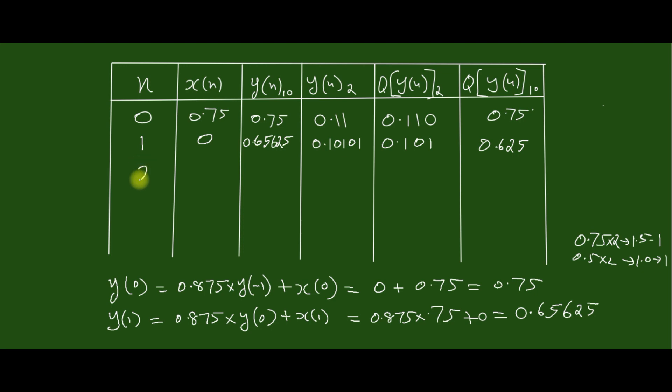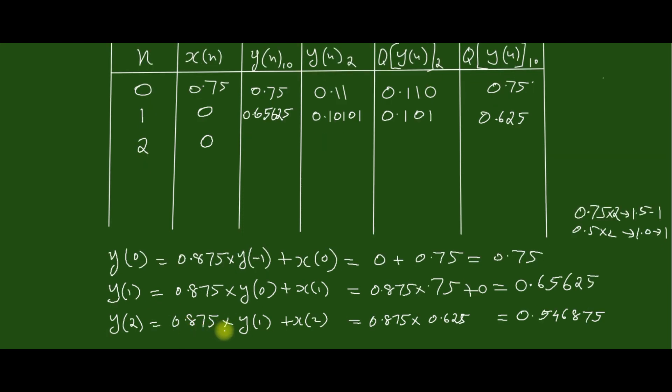Next, when n = 2, x(n) = 0, then y(n) can be computed as y(2) = 0.875 × 0.625, that is y(1), the previous quantized value, which is 0.546875. Now computing the corresponding binary, when it is rounded we get the value of 0.100, and the corresponding decimal number is 0.5.